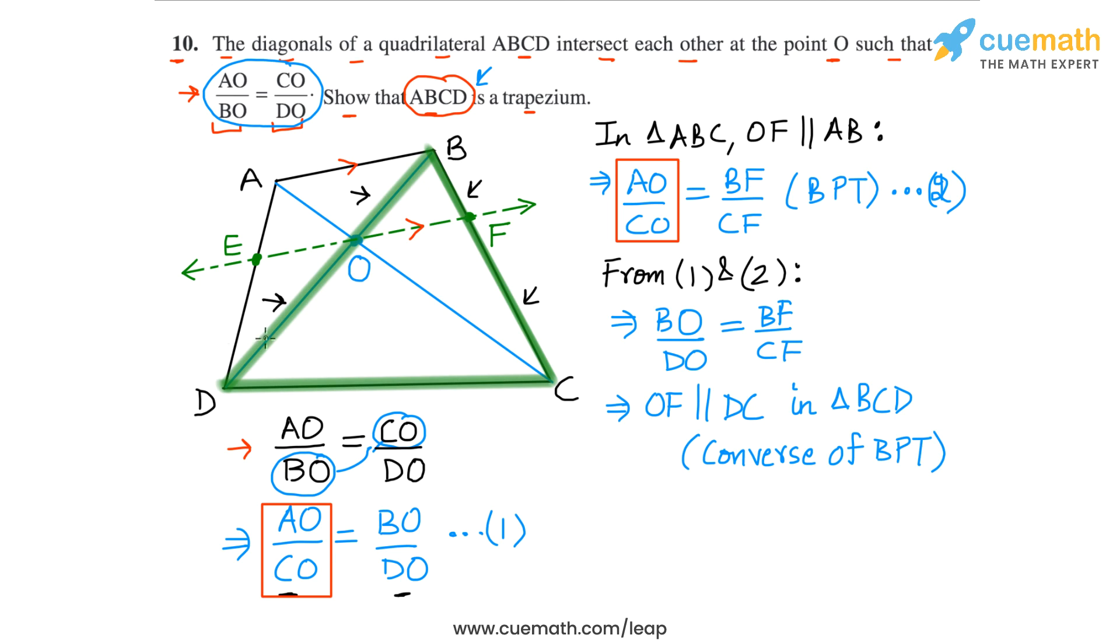Finally, if OF is parallel to DC, then we can say that AB must also be parallel to DC, and that's because AB is parallel to OF as well. So two lines which are parallel to a third line will be parallel to each other as well. So we have concluded that AB is parallel to DC, and this means that ABCD is a trapezium.